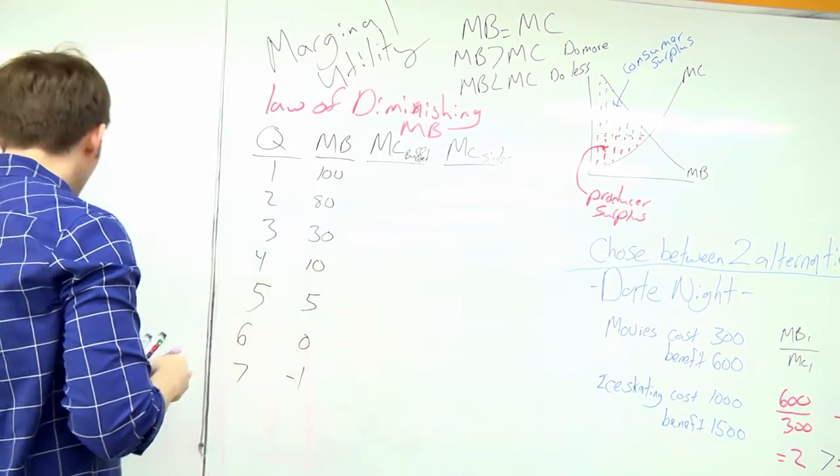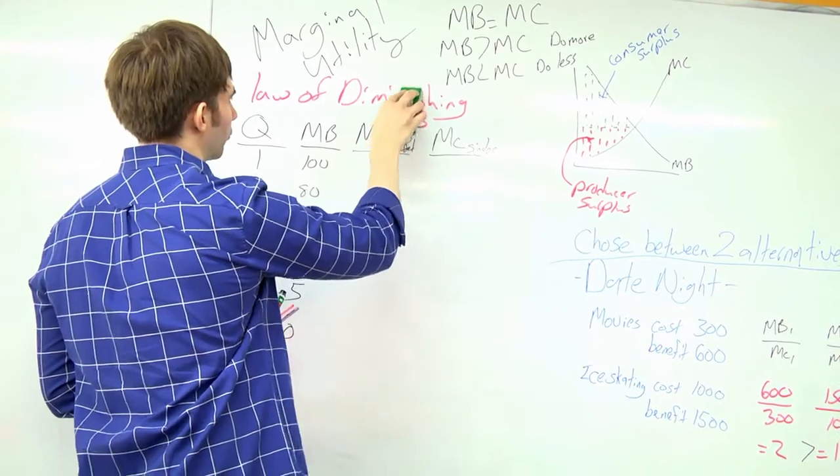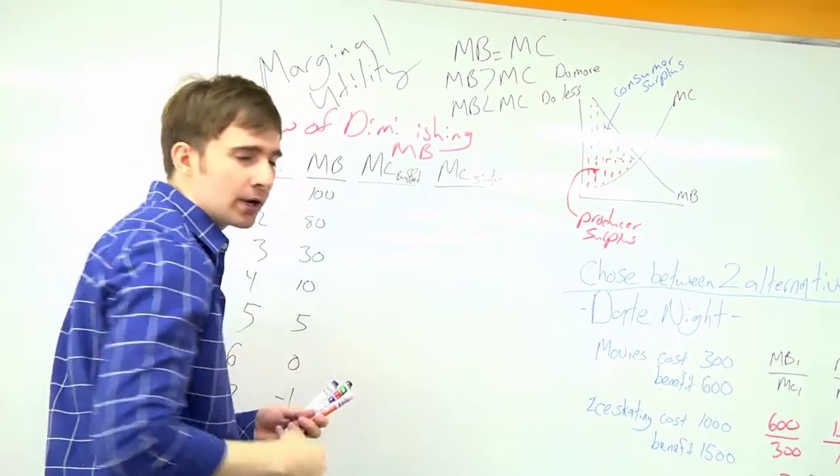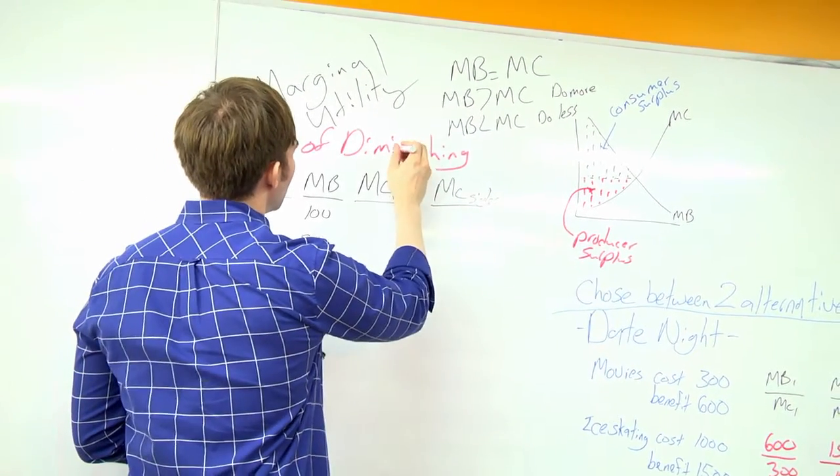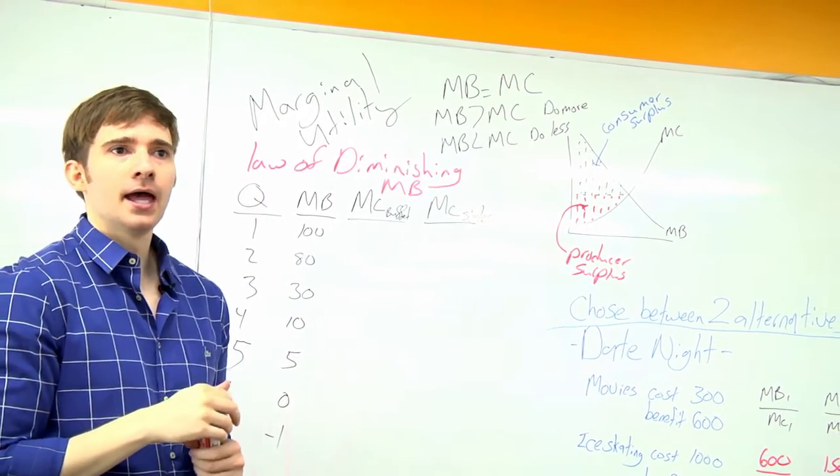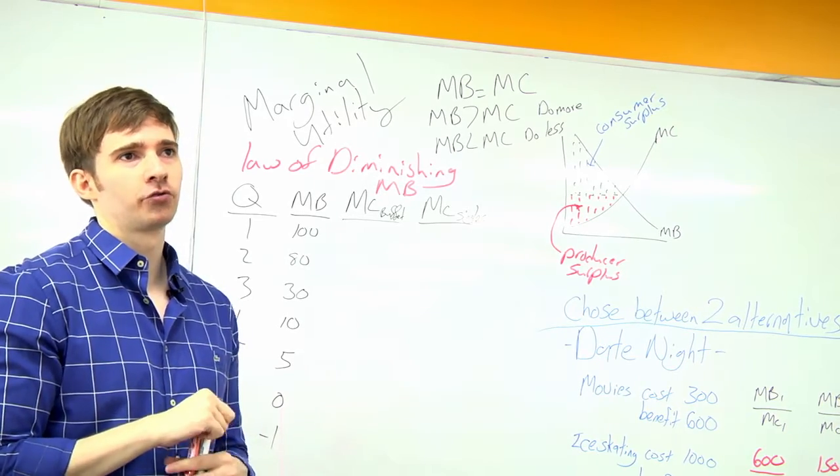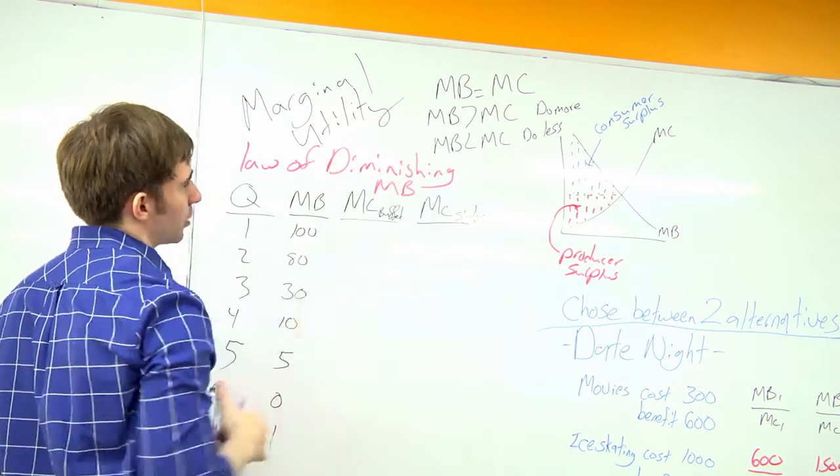The same can be said for any good or service within a period of time. Even if I were to give you a piece of gold, the first piece of gold, you can buy so much with it. And then the second piece of gold is giving you less happiness than that first piece of gold. So it's the law of diminishing marginal benefit.